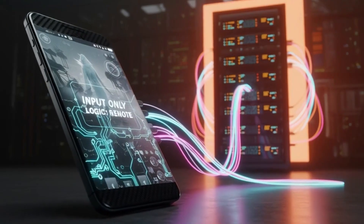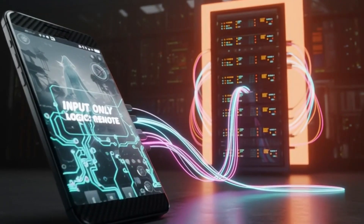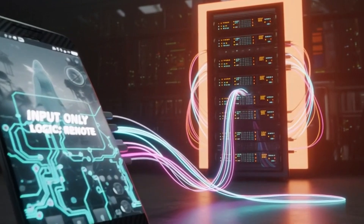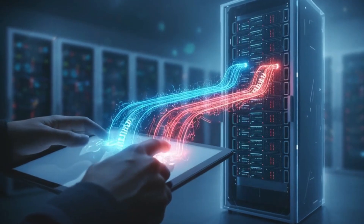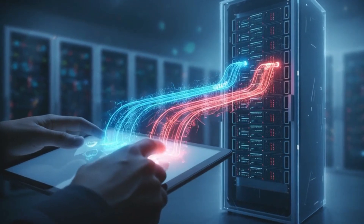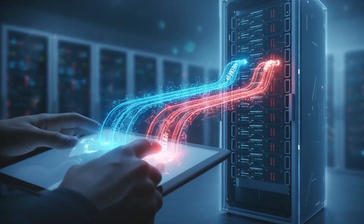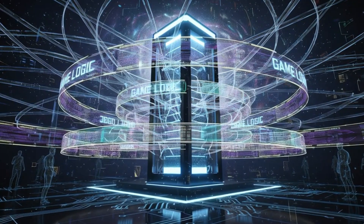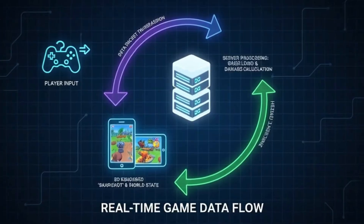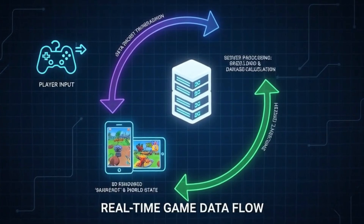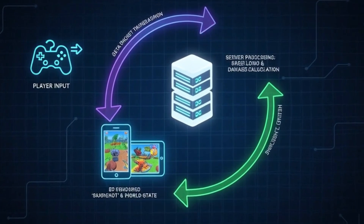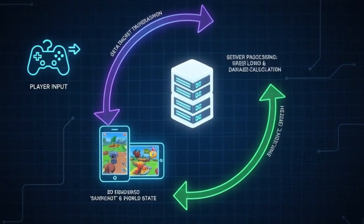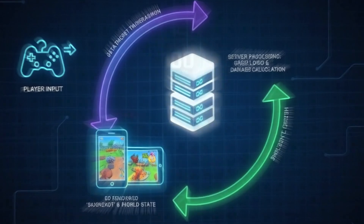In this model, your device is essentially a dumb terminal. It just sends your inputs — like move forward or shoot — to the game server. The server is the one true source of truth. It validates your input, updates the game state, calculates all damage, and then sends a snapshot of the world back to your device for you to see.